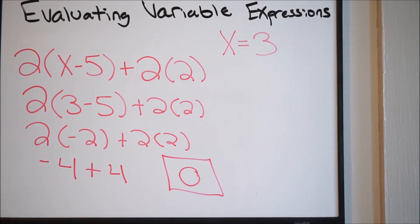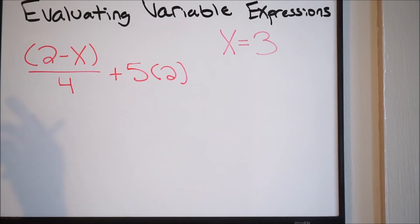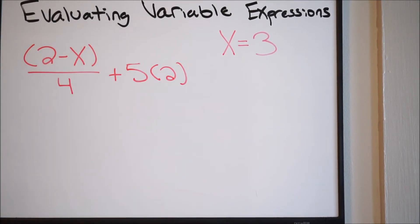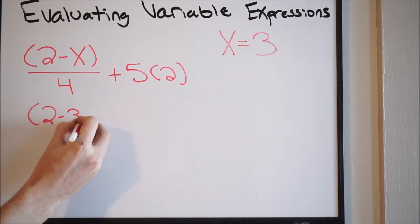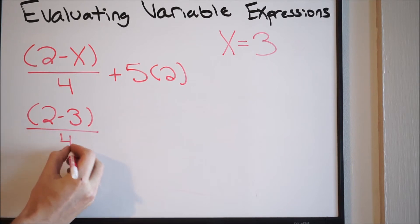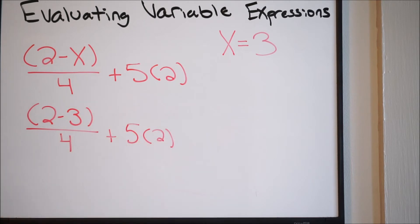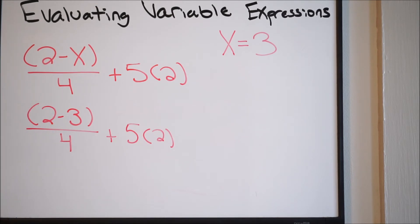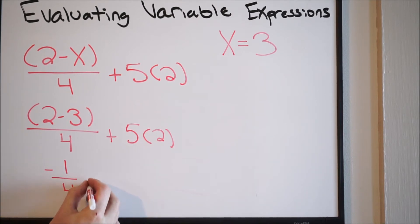Let's try another example. Wherever we see an x in this expression, we're going to go ahead and plug in a 3. So we're going to have (2 minus 3) all over 4, plus 5 times 2. Working what we have inside the parentheses, we have 2 minus 3, which gives us negative 1. So we now have negative 1 over 4, plus 5 times 2, which is going to give you 10.